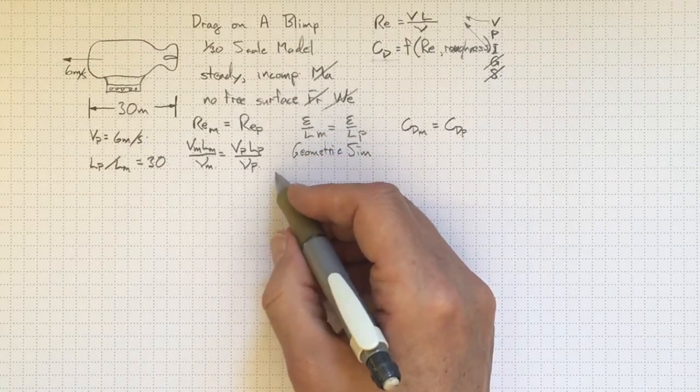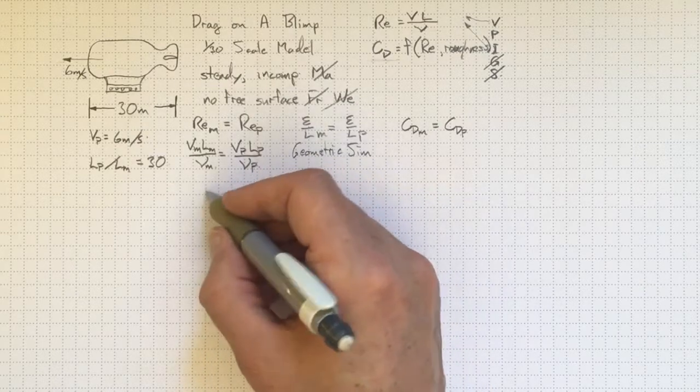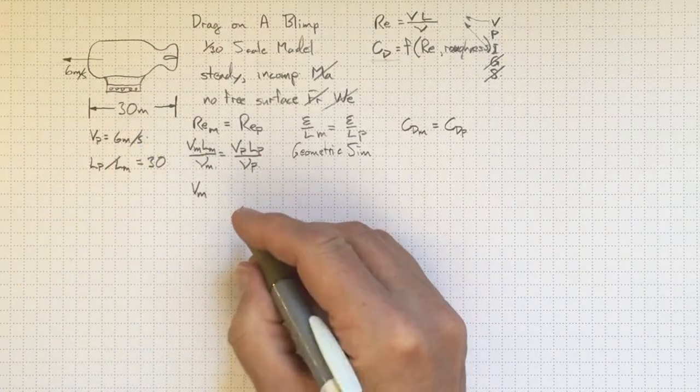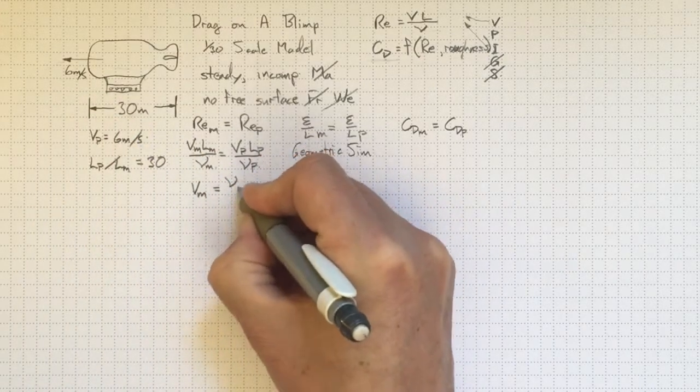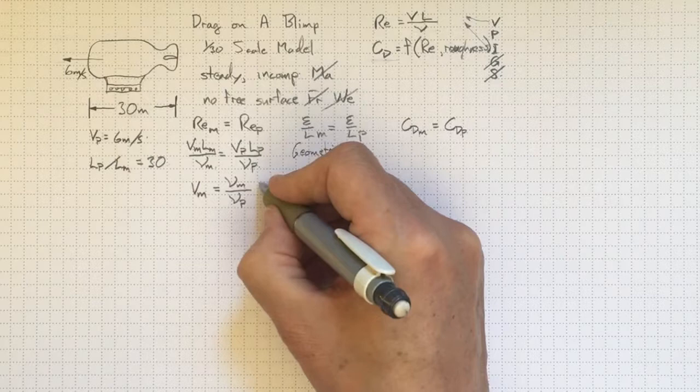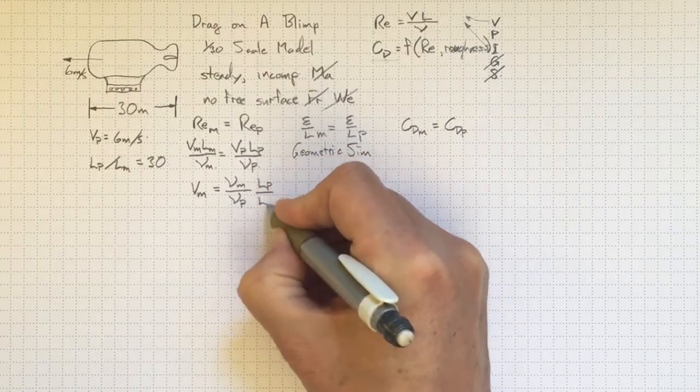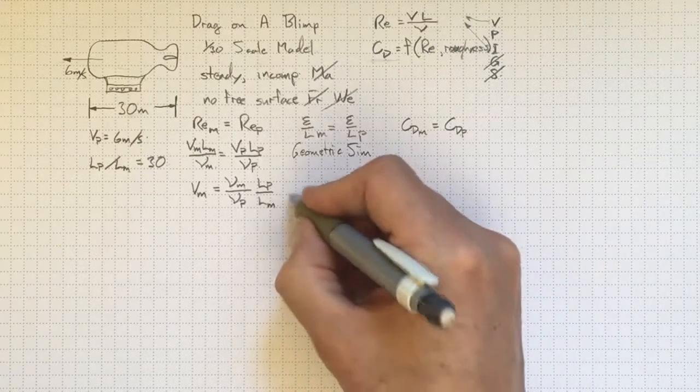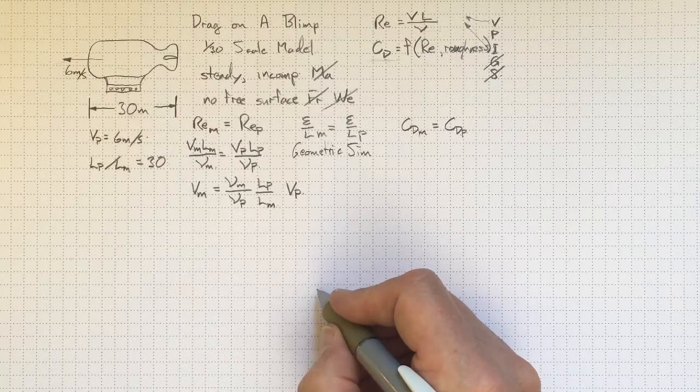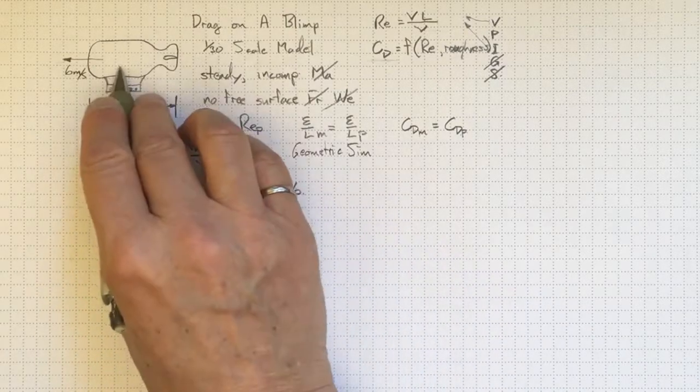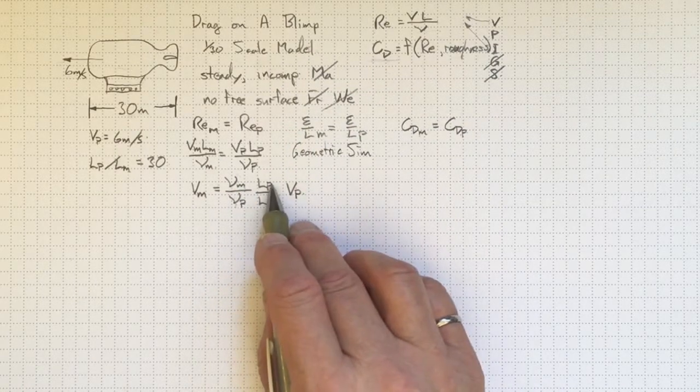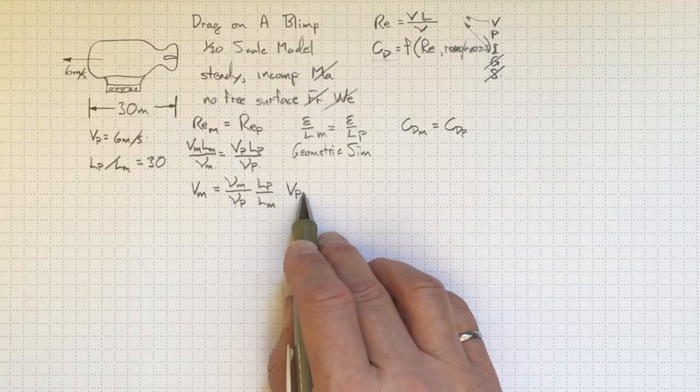Now my first instinct is to just test it in air. So let's rearrange this. The velocity for the model to correspond to our prototype conditions is going to be equal to the kinematic viscosity for the model divided by the kinematic viscosity for the prototype times the length for the prototype divided by the length for the model times the velocity of the prototype. So, if I took air for both the prototype and the model, then that would cancel out because those two properties are the same. I'd have 30 times the velocity of the prototype.